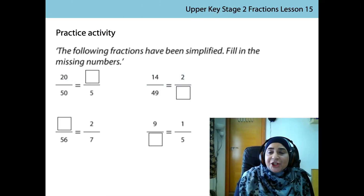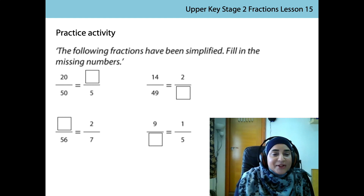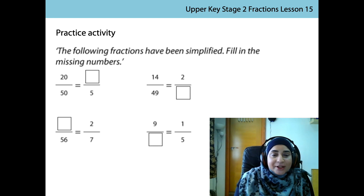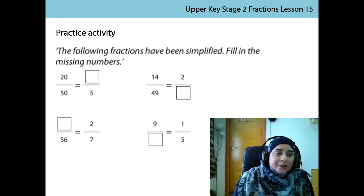In the first example, we know the denominator of the simplified fraction is 5. To get from 50 to 5, I need to divide by 10, but I also want to preserve the proportional relationship between the numerator and the denominator, so I must also divide the numerator by 10. When I divide 20 by 10, I get 2.